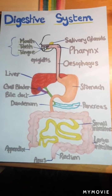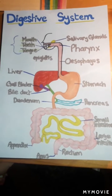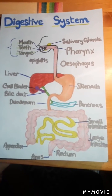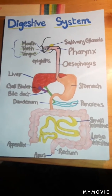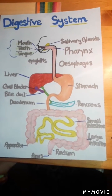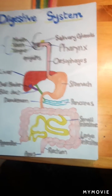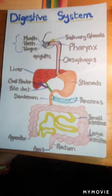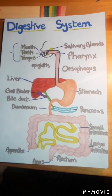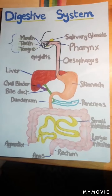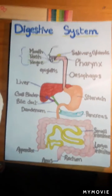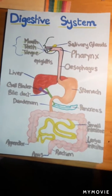The first stage of the digestive system is ingestion. When you chew your food, the food particles break down into little pieces that are easier to swallow. The saliva, which contains a lot of enzymes, mixes with those food particles and helps break them down even more.